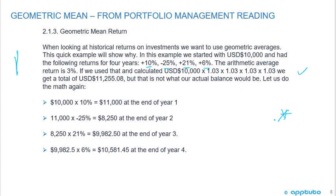The arithmetic average is 3%. 10 - 25 + 21 + 6 divided by 4 gives us 3%. If we use that arithmetic average and started with $10,000 and multiplied by 1.03 four times, we would get $11,255.08. But that's not what our actual balance would be. $10,000 × 1.10 = $11,000. Then $11,000 × 0.75 = $8,250. Then $8,250 × 1.21 = $9,982.50. Finally, $9,982.50 × 1.06 = $10,581.45, which is considerably less.